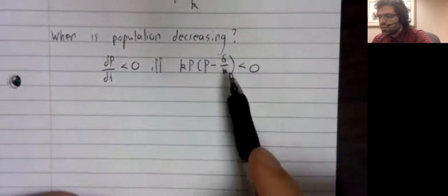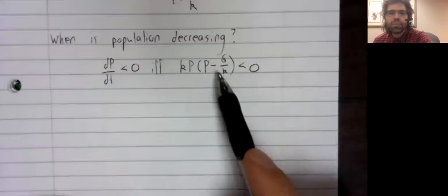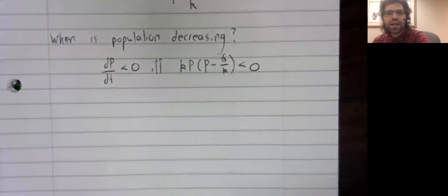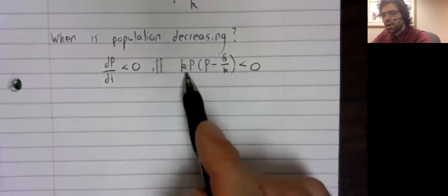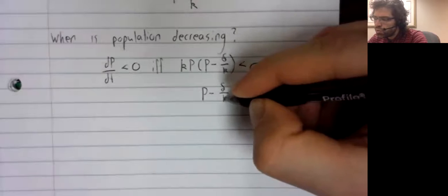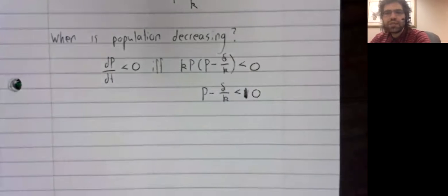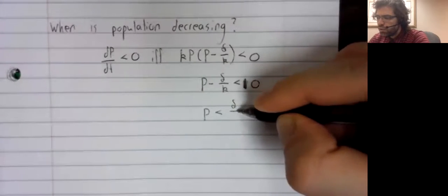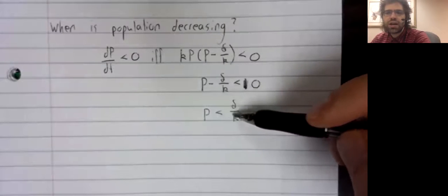I mentioned this because if you have an inequality, you have to be careful when you divide both sides of it by something. If you divide both sides of an inequality by a negative term, that would flip the direction of the inequality. But kp is positive, so we'll do this division both sides by kp. And zero divided by kp is still zero. So the population is decreasing when it's less than delta divided by k.